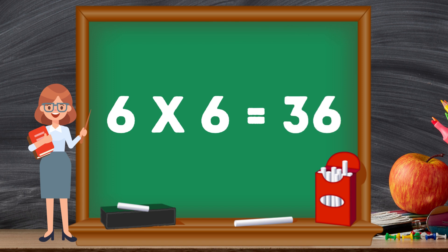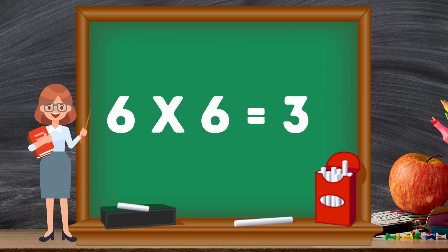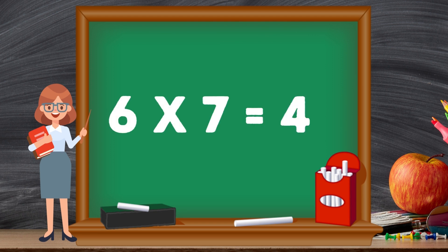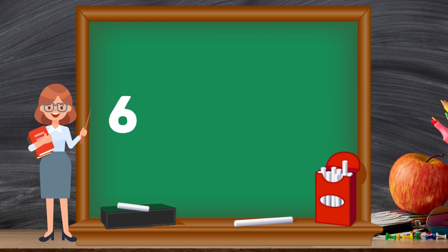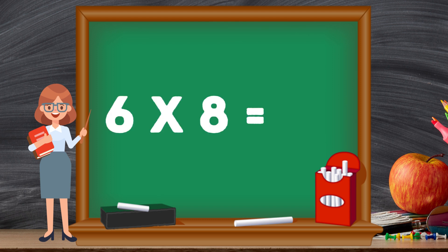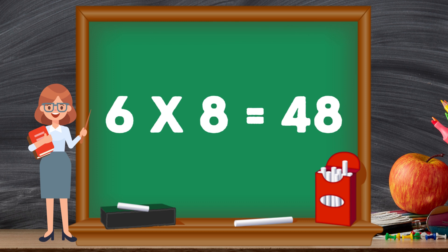Six sixes are thirty-six. Six sevens are forty-two. Six eights are forty-eight.